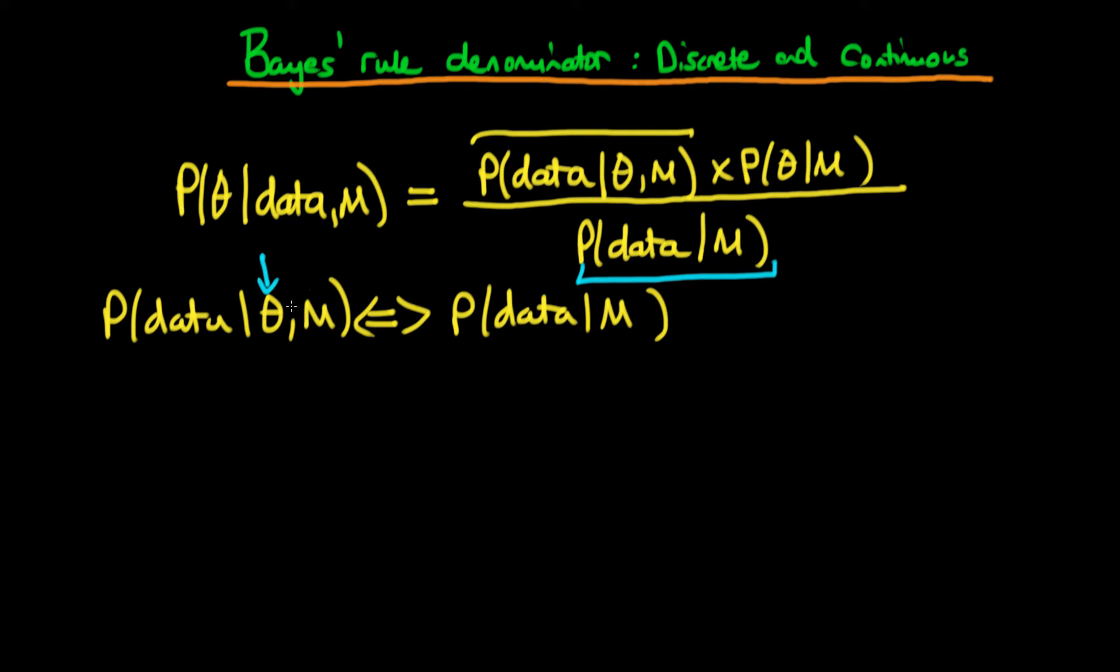And we know that essentially what that actually means is that this thing on the right hand side here is what we call a marginal probability density. It just looks a little bit more complicated because we're still conditioning on model choice. And this is just our conditional probability. And we know how to get from the conditional to the marginal.